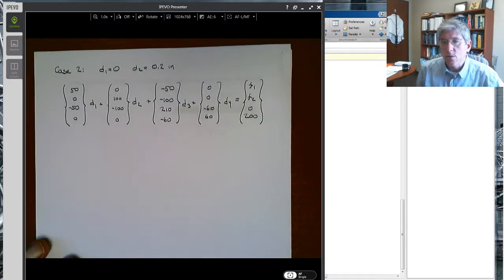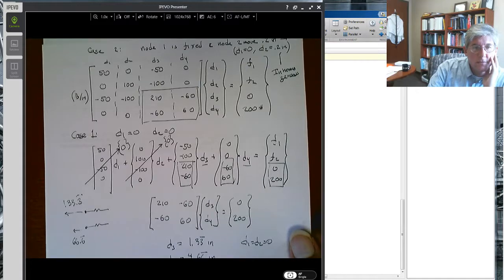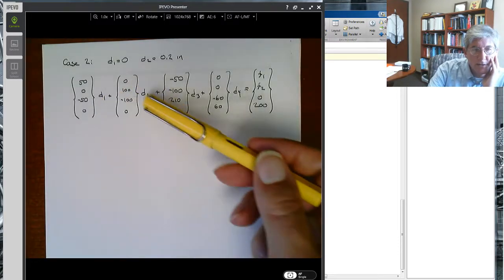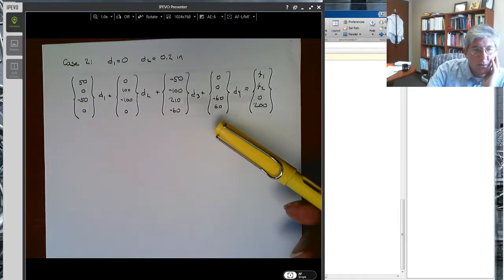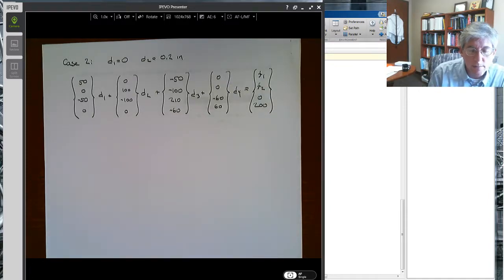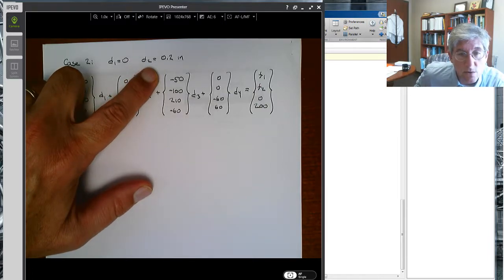So let's go and do case two. It's the same problem, so I just rewrote the system of equations we have here. You can see it's the same stiffness matrix, d1 through d4, and the same right-hand side. We have the unknown f1 and f2, the reaction forces. But in this case, d1 is zero, and now d2 is no longer zero, but 0.2 inches.